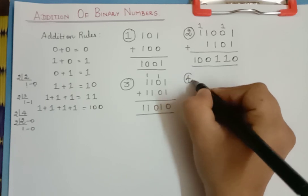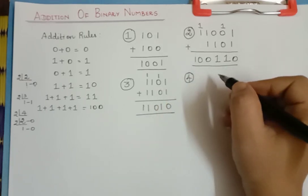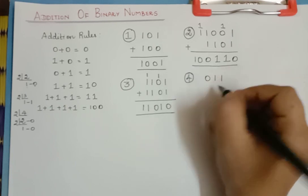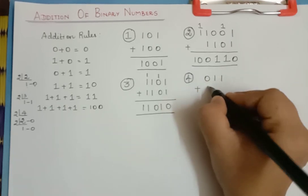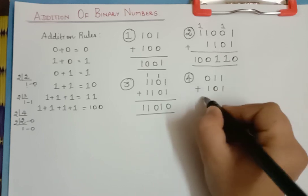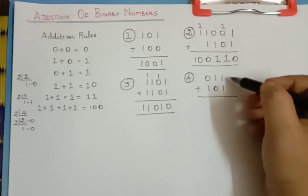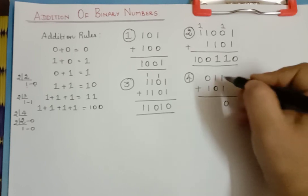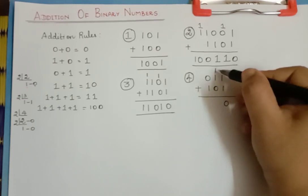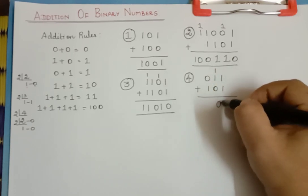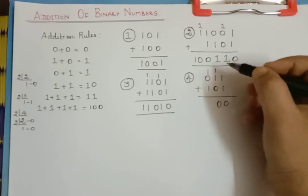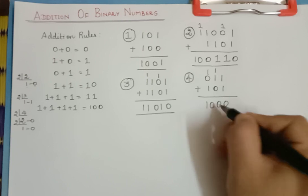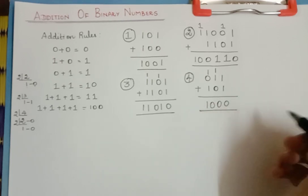Let us do binary addition of another number. Let us take 011 and add it with 101. The addition: 1 plus 1 is 0 with a carry over of 1. And again 1 plus 1 is 0 with a carry over of 1. And here you have 1 plus 1 which is 10. So this is the answer.